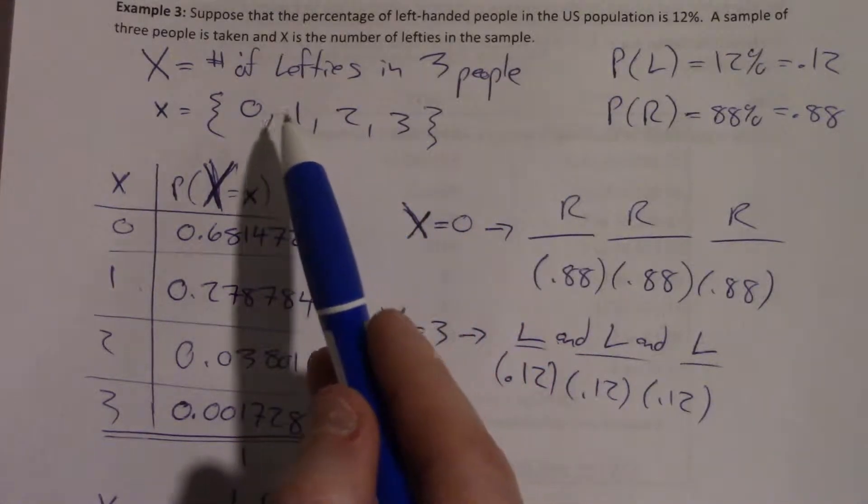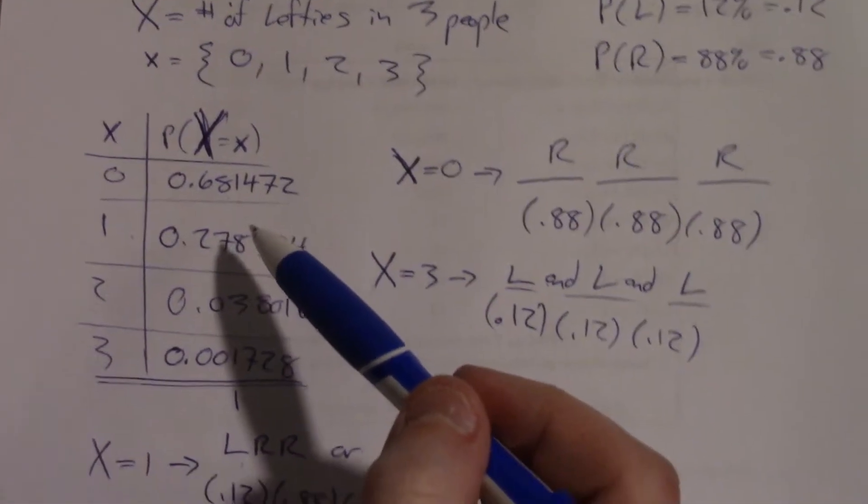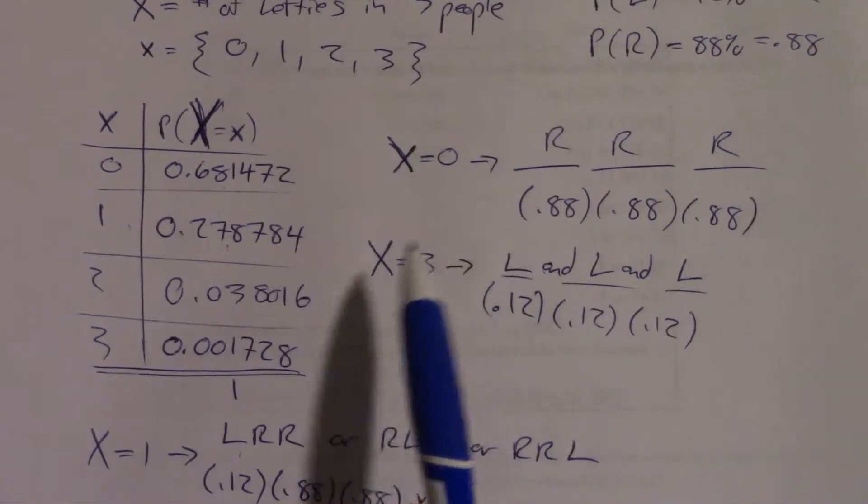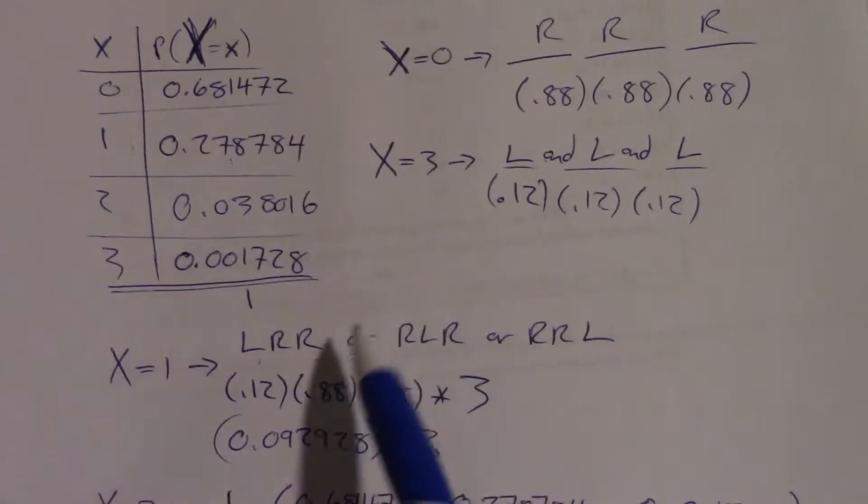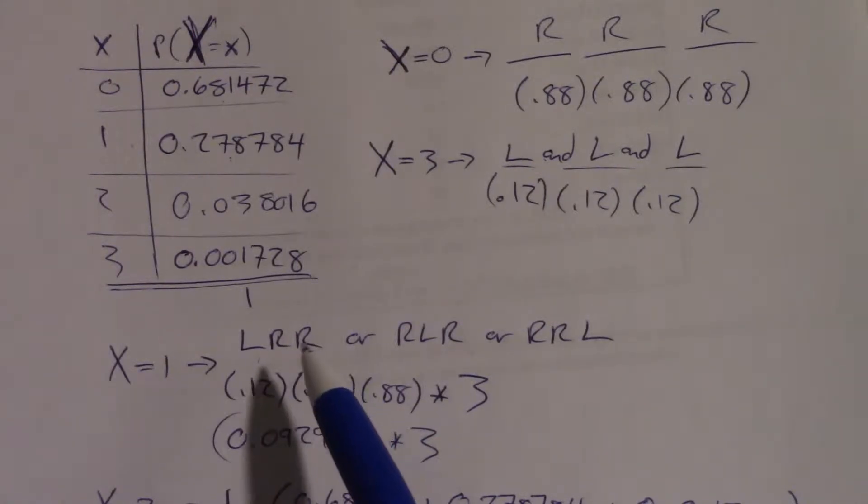So then what we want to know is, what are the different values I could see? And what are the probabilities associated with them? Built into all of these calculations are all of the rules we were talking about before. We're still using the multiplication rule. We're still using the general addition rule. We're actually still even using conditional probabilities.